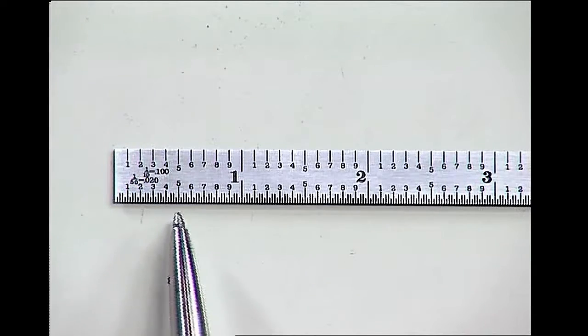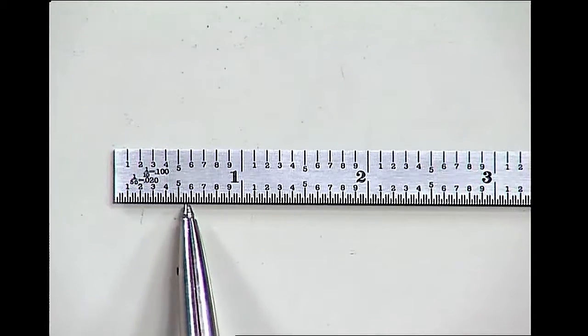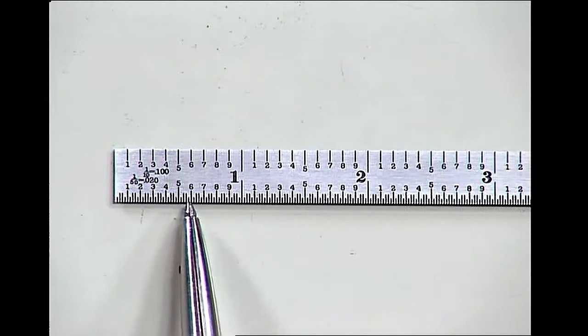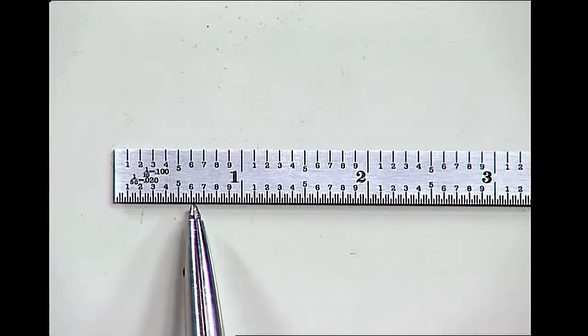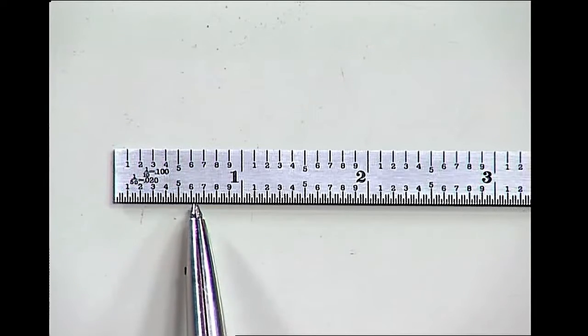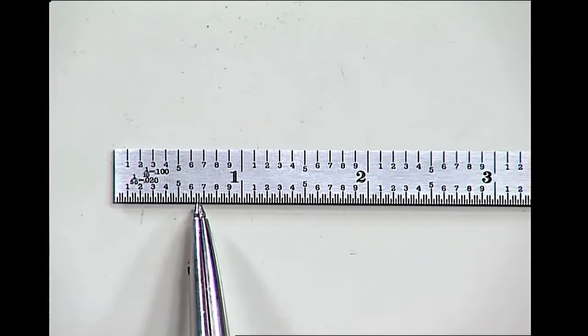So now you can read this ruler. If you're by the six over here, each line is twenty thousandths, so it's six hundred, six hundred and twenty, six hundred forty, six hundred sixty, six hundred eighty, seven hundred.